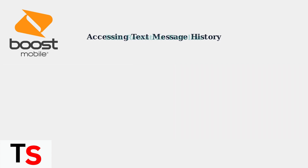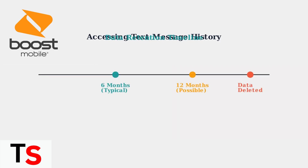Boost Mobile typically retains your text message history for the most recent six months, though some sources suggest up to 12 months may be available online. After this retention period, the data is automatically deleted and no longer accessible.